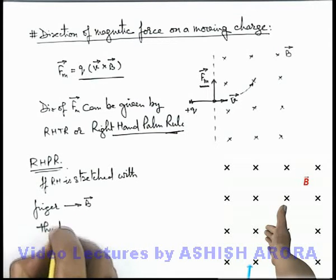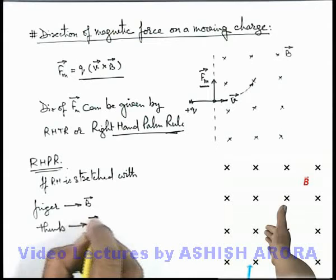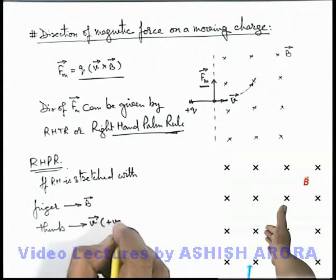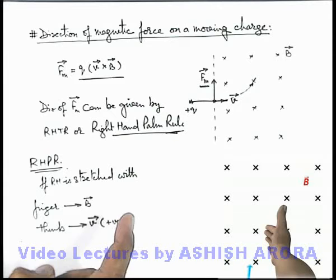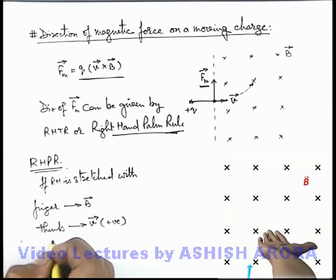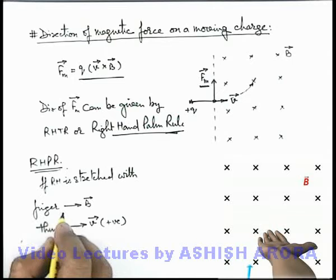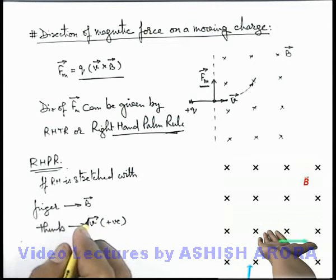And if we keep our thumb along the direction of velocity vector of positive charge, which is here towards right, so here you can see we rotate this hand in such a way that magnetic induction is pointed by the fingers and thumb is along the direction of v-vector.